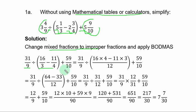And if you change this, you have 59 over 10. By the rule of BODMAS, we need to simplify the terms in the bracket first. And in the bracket, you have fractions subtraction. You find the LCM of the denominator and the LCM is 12. You divide 12 by 3, you have 4. 4 times 16 minus. You divide 12 by 4, you have 3. 3 times 11.